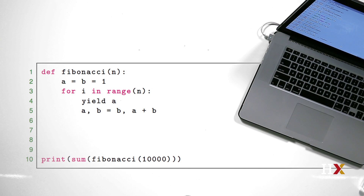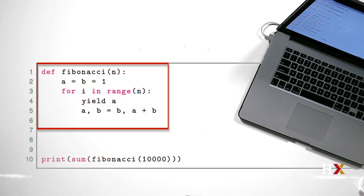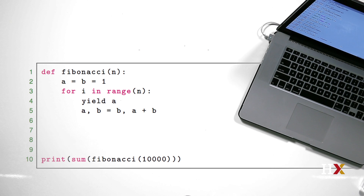Let's get started by looking at a short code snippet. This code is a good example of a short Python program that's fairly simple, yet it requires you to understand many fundamental concepts of Python. The Fibonacci function computes the first n terms of the Fibonacci sequence. The code underneath the function calls the function 10,000 times, asking Python to compute the first 10,000 numbers in the Fibonacci sequence, and then it adds those numbers up.